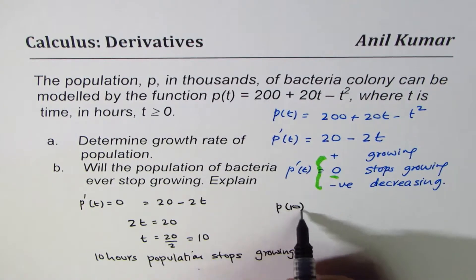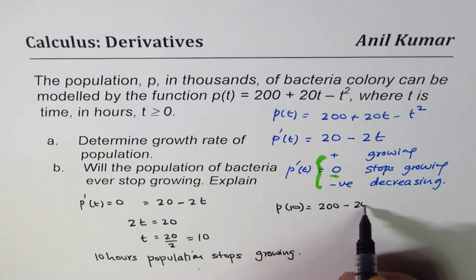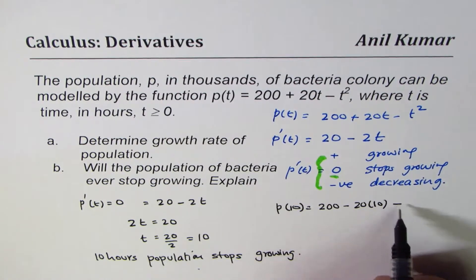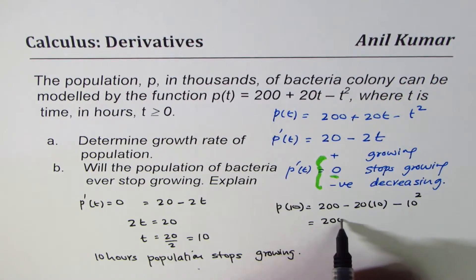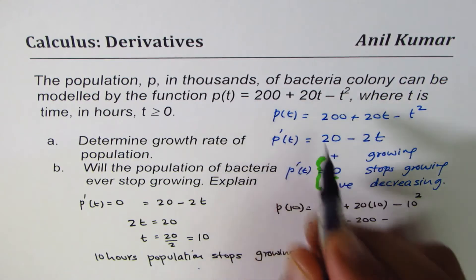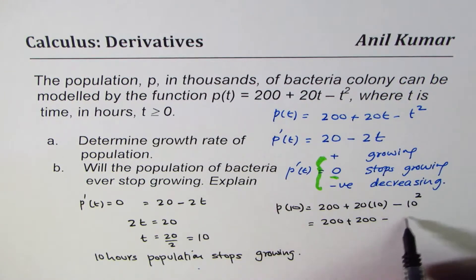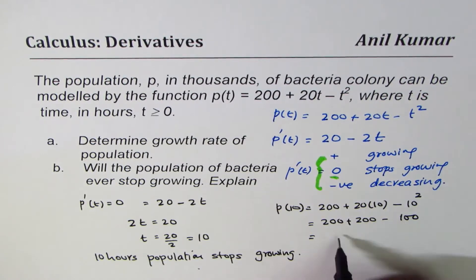So P(10), if I substitute 10 here, I get 200 + 20 times 10 minus 10 squared. Which is 200 + 200 - I'm sorry, this is plus in the equation. 10 squared is 100, now it's okay. So 400 minus 100 is 300.